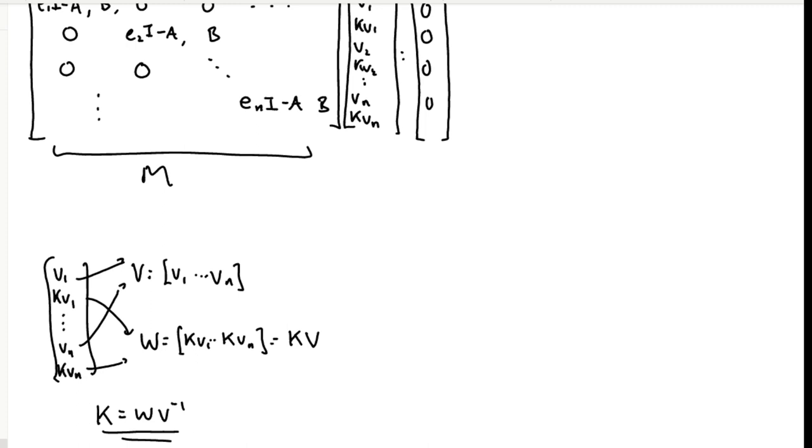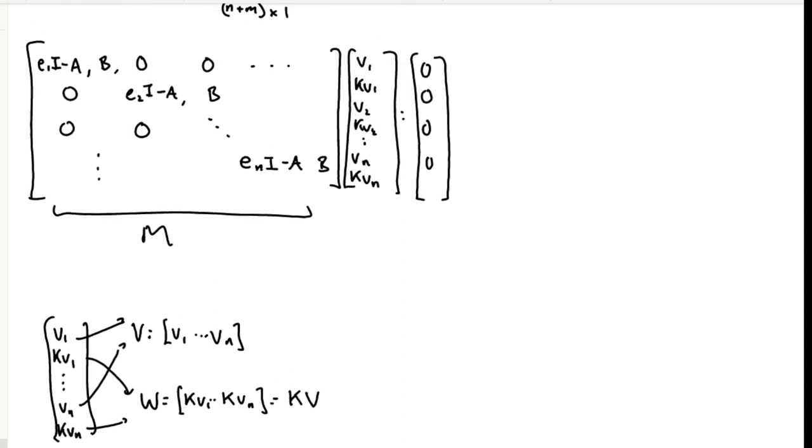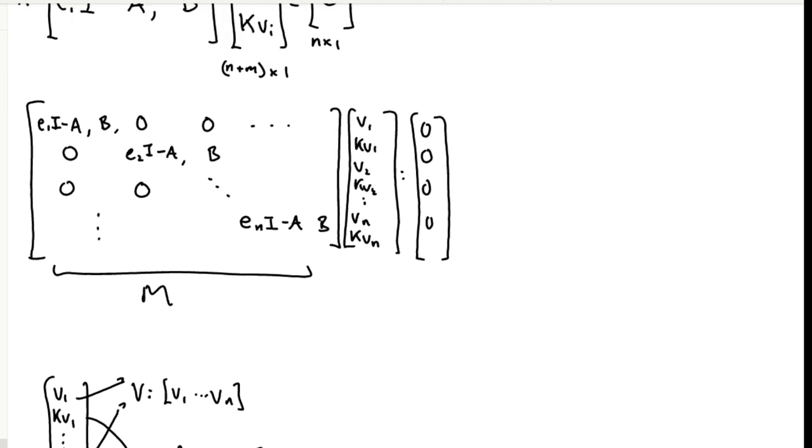We can solve, if we can find this vector, we can solve for the gain matrix K by rearranging K times the eigenvectors of the system into this matrix W, which is the same as K times V, and then taking the inverse of V on the right side to recover our gain matrix K. This means that any solution of this equation here will give us a desired eigenvalues, will give us a gain matrix that will result in the desired eigenvalues.